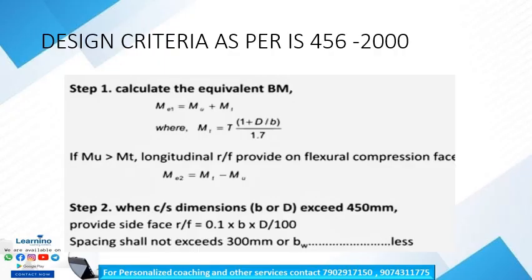Step 1 is the calculation of equivalent bending moment Me1. We calculate Me1 as mu plus mt, where mu is the bending moment at the cross section. The formula for mt is: mt = T × (1 + D/b) / 1.7, where T is the torsional moment, D is the overall depth of the beam, and b is the breadth of the beam. If mu is greater than mt, longitudinal reinforcement is provided on the flexural compression face.